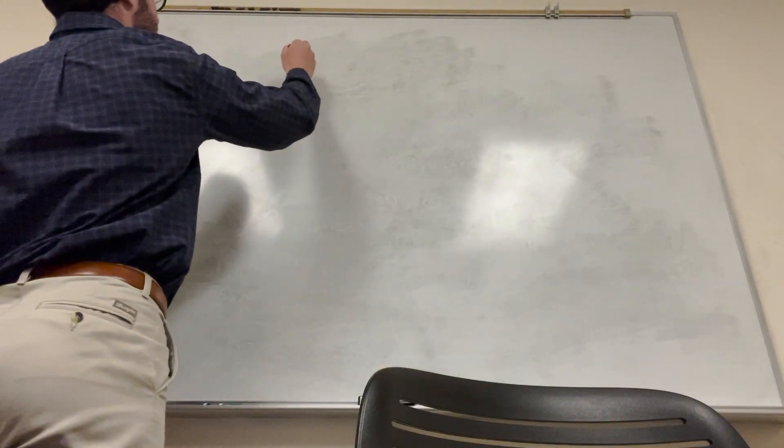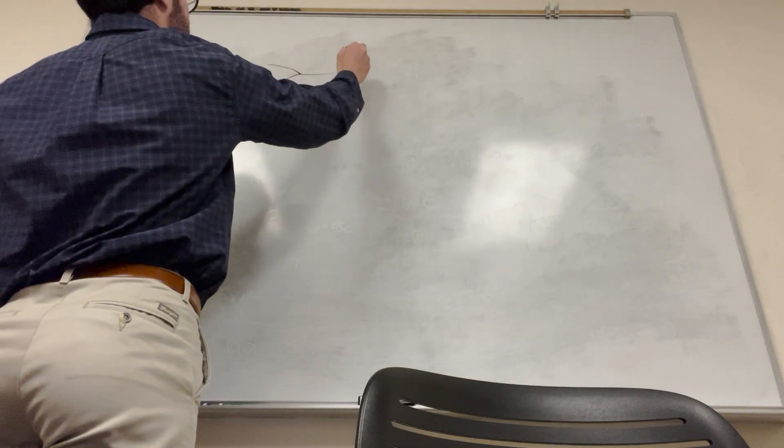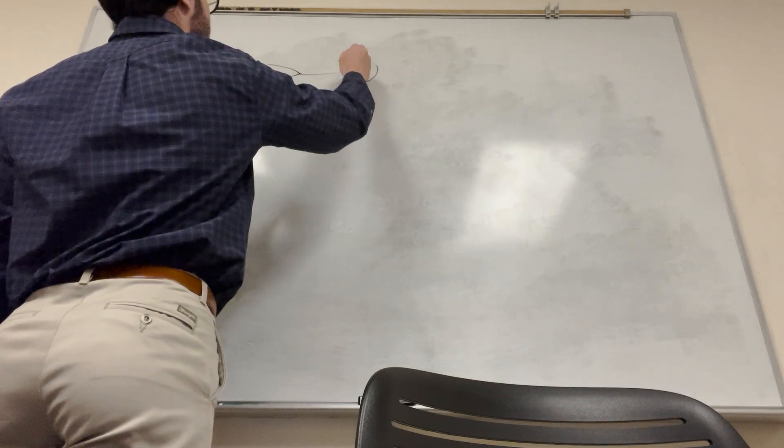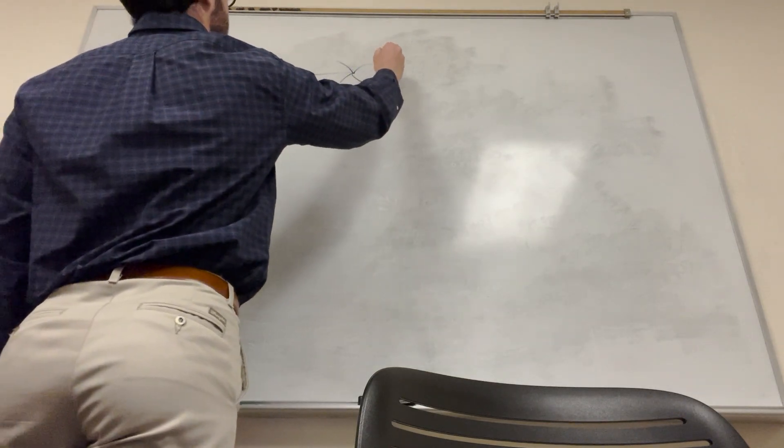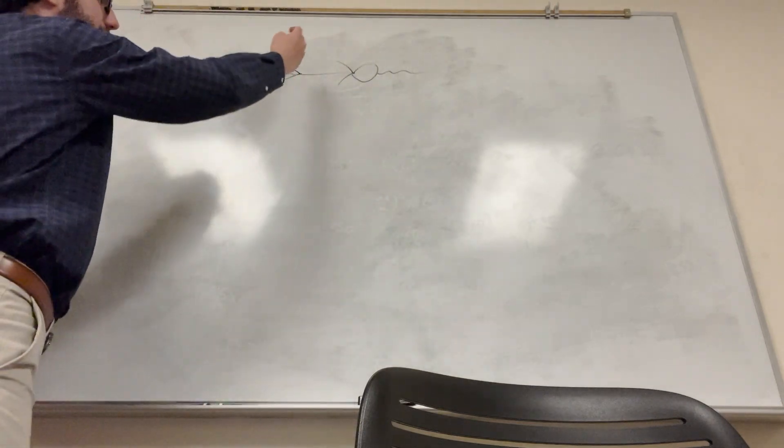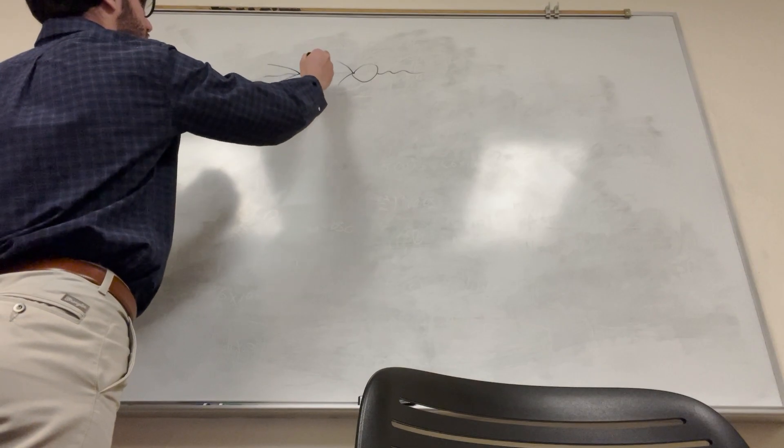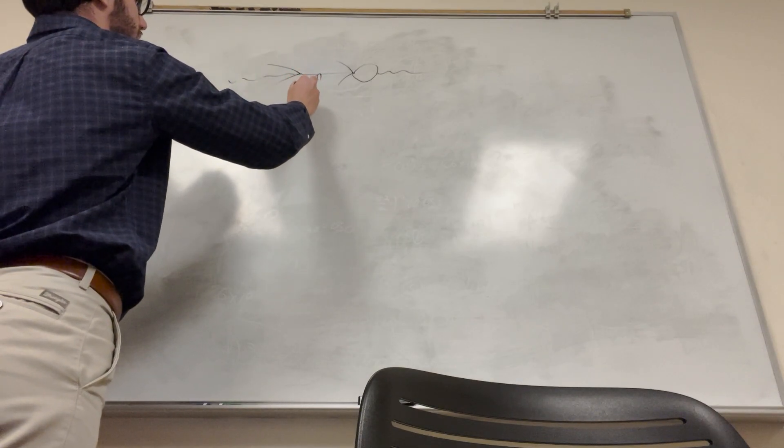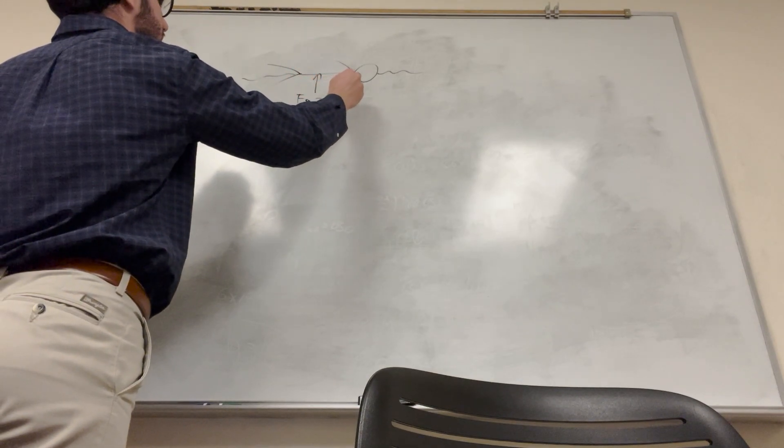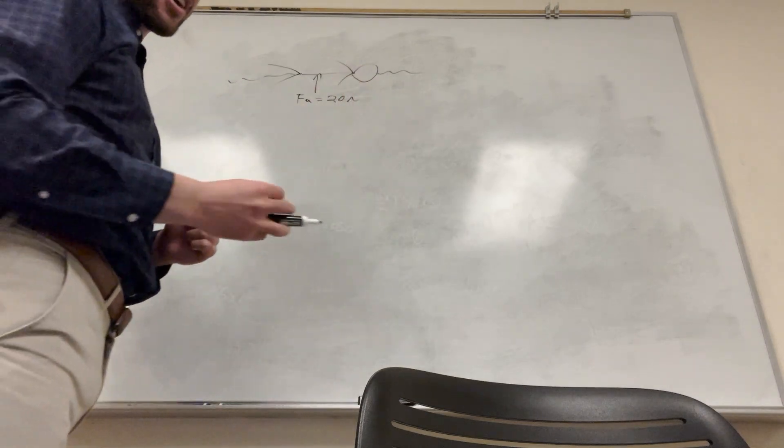So let's kind of draw this. So we got a dude here, or a girl, or anyone really. It doesn't have to be a dude or a girl. So they're sinking, whoever it is. So they need a constant force to be held up. So that's 20 newtons. So let's draw a force body diagram of what's going on here.